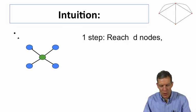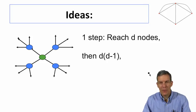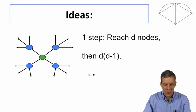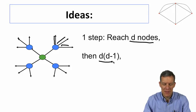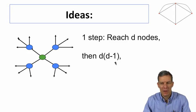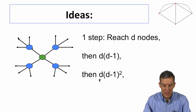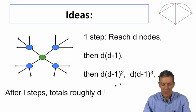So on step one, we reach d other nodes. The next step, we reach another d minus one. So now each one of these has four neighbors, so we get three more neighbors out here. So we reach d on the first step, we reach another d times d minus one on the second step, then d times d minus one squared, d times d minus one cubed, and so forth.